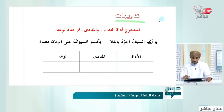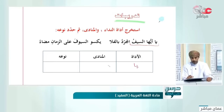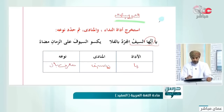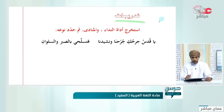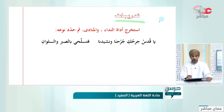يا أيها السيف المجرد بالفلا يكس السيوف على الزمان مضاء. الأداة 'يا' والمنادى 'السيف'. توصلنا لنداء المعرف بأل بـ'أيها'، فنوعه معرف بأل.